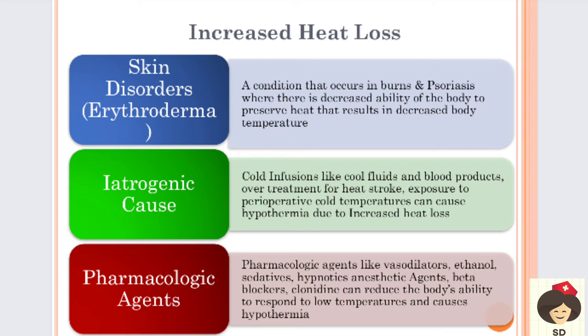In treatment of heat stroke - where body temperature is more than 105 degrees Fahrenheit - treatment is done to cool the body using cold liquids and cold fluids, and during this the patient can also go for hypothermia. Exposure to perioperative cold temperatures - in the operation theater and post-recovery unit, temperatures are maintained very low. When the patient is exposed to these temperatures for prolonged time, they can go for hypothermia due to increased heat loss. These are iatrogenic causes because they are induced by healthcare people.